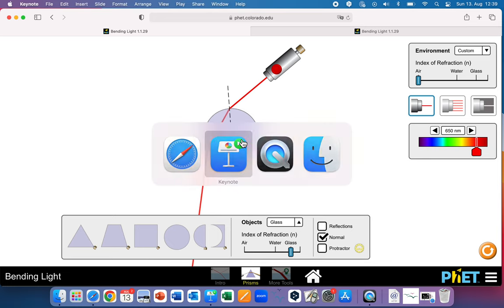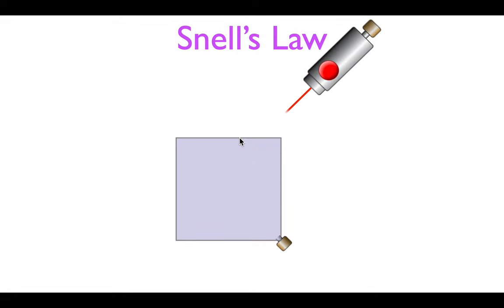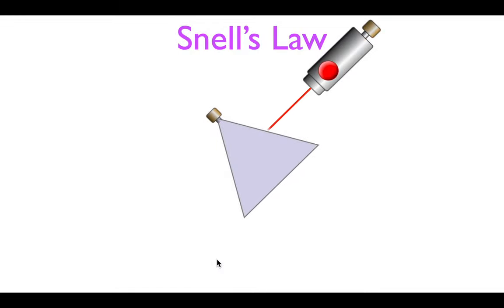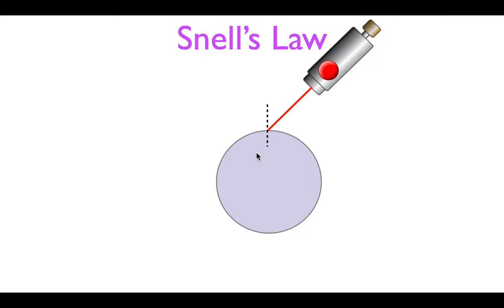Let's go back to our presentation for a quick review. For the square prism: the ray strikes that boundary and bends towards the normal line, then strikes the other boundary and bends away. The angle of refraction is less than the angle of incidence on entry, and greater than the angle of incidence on exit. For the triangle: make sure you draw the normal line perpendicular to the side, not vertically — enter, bend towards the normal line, leave, bend away. For the circle: same thing — bends towards the normal line entering, bends away refracted from the normal line exiting.